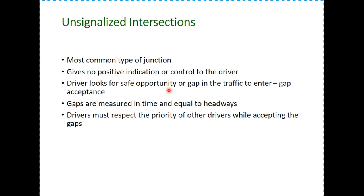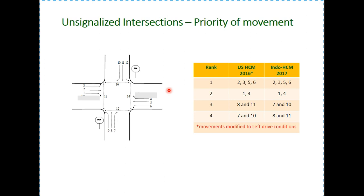At uncontrolled intersections, movement is under a certain order of priority and drivers must respect the priority of other drivers while accepting gaps. Looking at this figure, this is a common practice to number the movements at an unsignalized intersection. This is the major street — east-west — and this is the minor street, north-south.